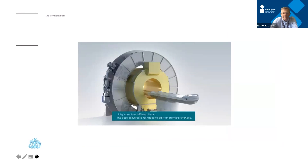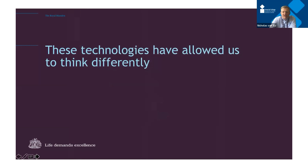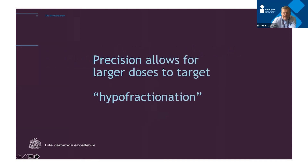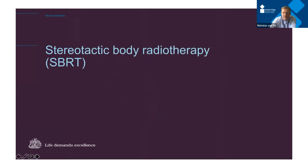These technologies have allowed us to think very differently about how we deliver radiation. The precision allows us to use much larger doses to the target — a concept called hypofractionation, or at the extreme, stereotactic body radiotherapy (SBRT). For prostate cancer five to ten years ago, we treated with 2 Gy per day over seven and a half weeks — 37 attendances. That's now standardly done over four weeks, and we'll look at data for doing it in just five treatments.